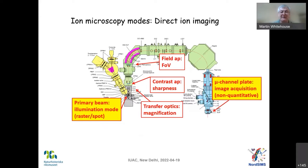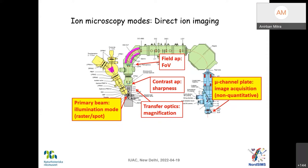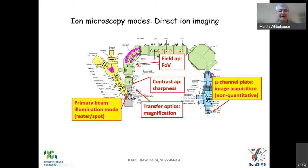For ion imaging, here is a schematic of the probe — it's probably exactly the same schematic you have up on your wall in New Delhi. You have a primary column here, a sample chamber, and the transfer optics. The ions come into the transfer optics, go through the electrostatic analyzer for energy filtering, then into the mass analyzer — the magnet — and come to the detection array.